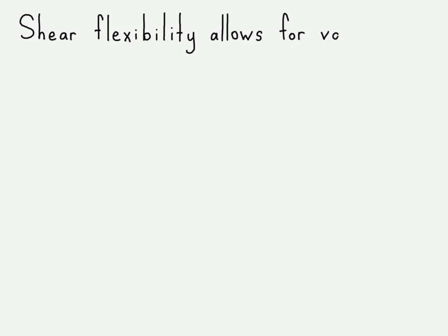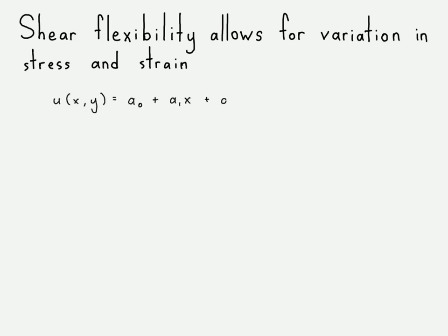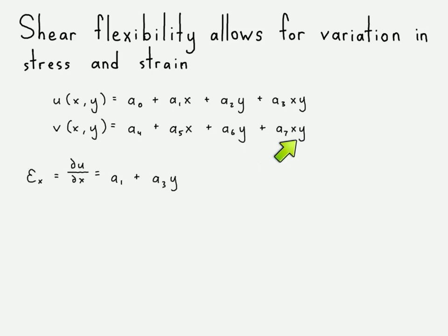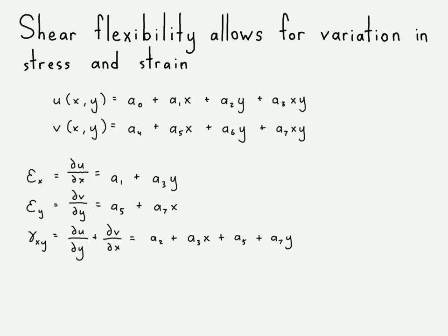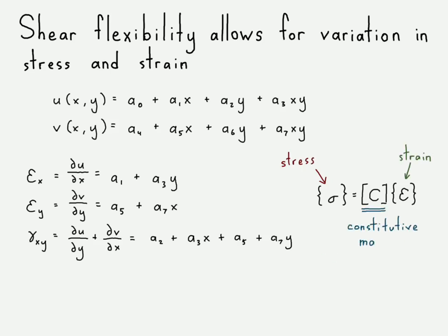The shear flexibility term allows for linear variation in stress and strain. These are the displacement functions: u in the x direction and v in the y direction, with shear flexibility terms. Because of those shear flexibility terms, when we take the derivative of our displacement functions, we have terms that vary — displacement in x can vary in the y direction, displacement in y can vary in x, and shear strain can vary in x and y. This gives us Hooke's Law here, emphasizing that just like our strain, our stress can also vary in x and y for these element types.